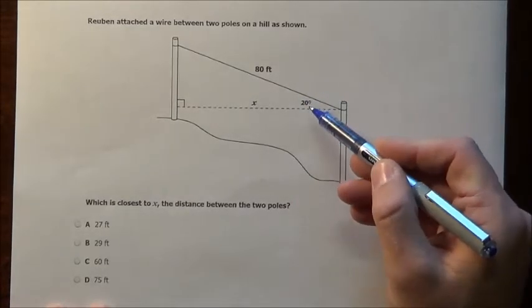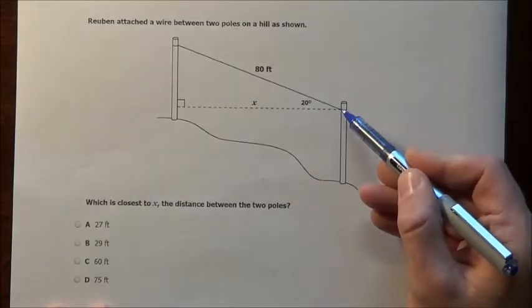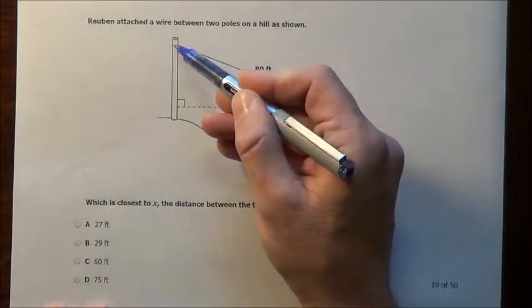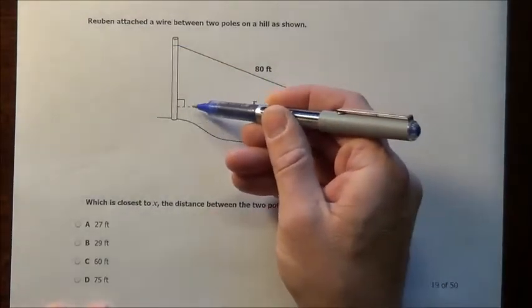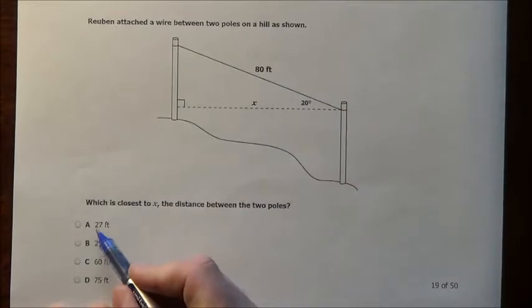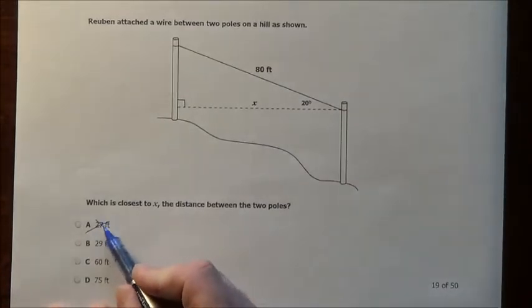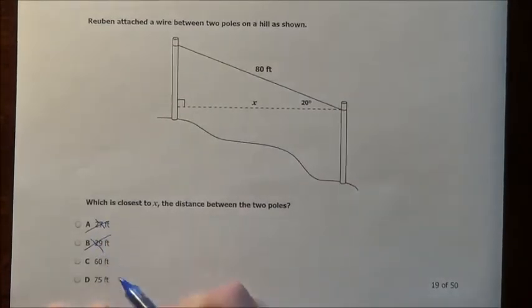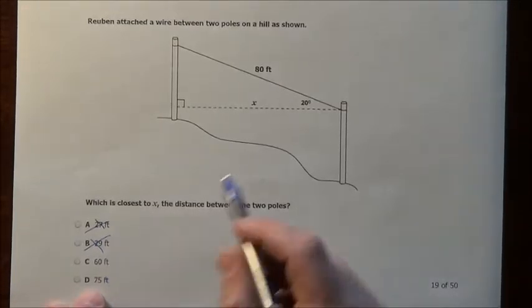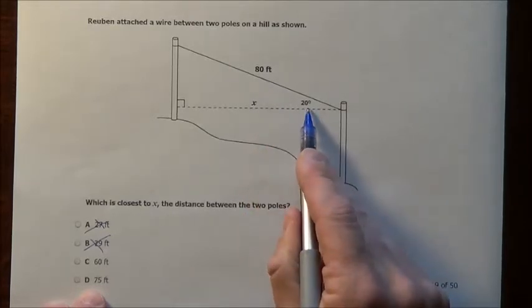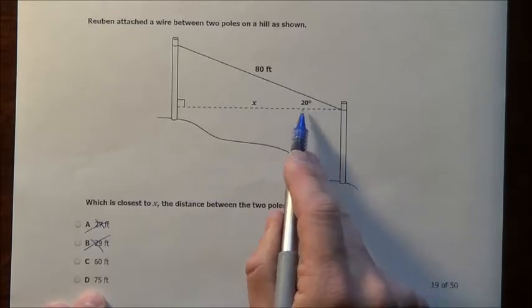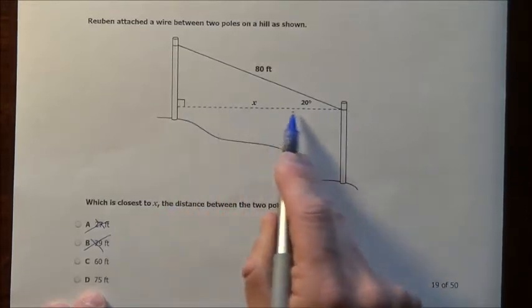Now common sense before we even start this problem, if that's 20 degrees it's not much of an opening. So here where the little slant is 80, this is going to be sort of close to 80. Right away I can look at A which says 27, there's no way it's 27, nor 29. I'm going to guess 75, we'll work the problem and see, but it's going to be close to 80 because that's just a little opening, 20 degrees isn't much, so this length here is going to be pretty close to that 80.